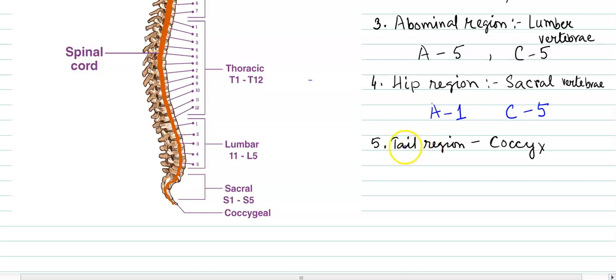We are talking about the tail region. In the tail region, it has a name called coccyx. It is called coccyx, but it has another name. It is called caudal vertebra.